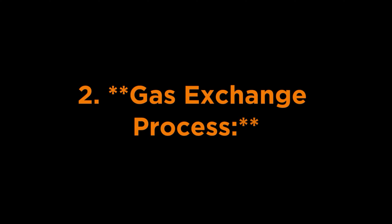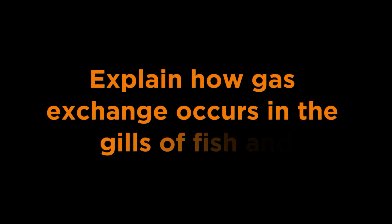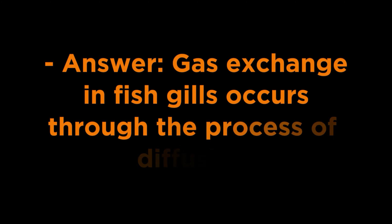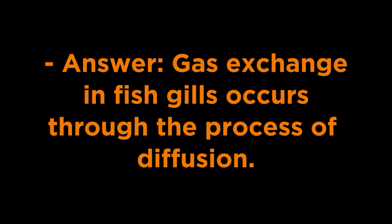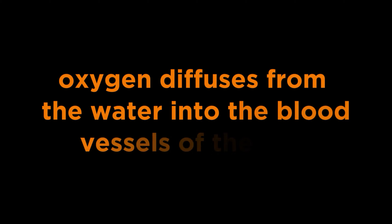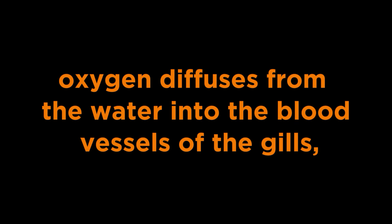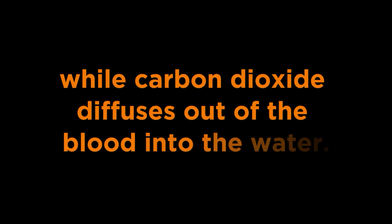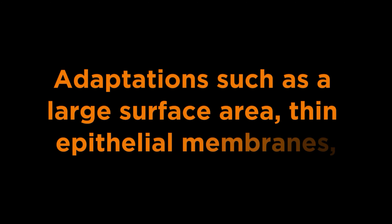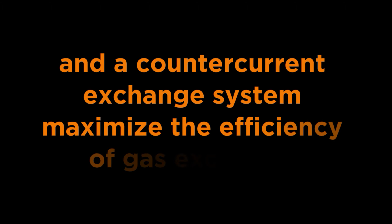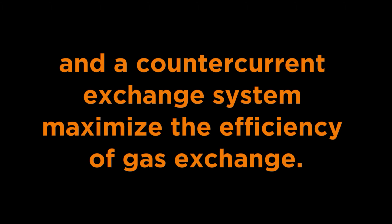Question 2 - Gas Exchange Process: Explain how gas exchange occurs in the gills of fish and the adaptations that facilitate efficient oxygen uptake. Answer: Gas exchange in fish gills occurs through the process of diffusion. As water flows over the gill lamellae, oxygen diffuses from the water into the blood vessels of the gills, while carbon dioxide diffuses out of the blood into the water. Adaptations such as a large surface area, thin epithelial membranes, and a counter-current exchange system maximize the efficiency of gas exchange.